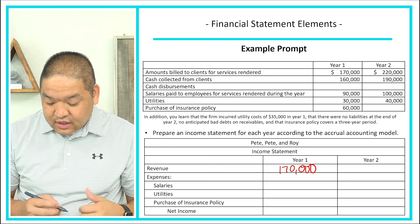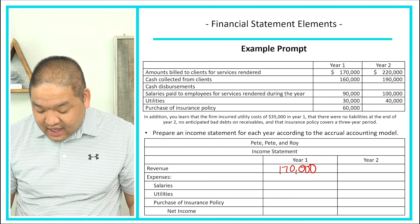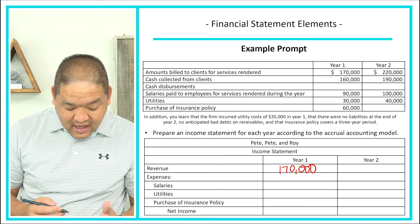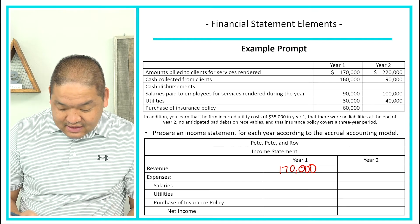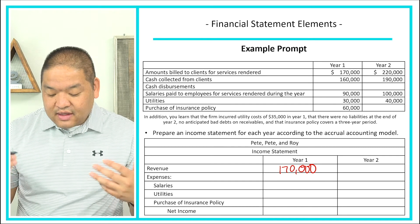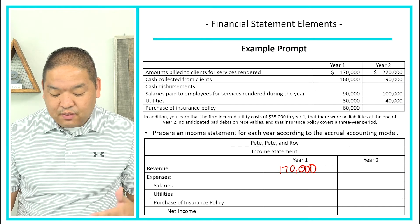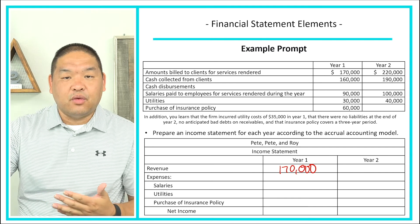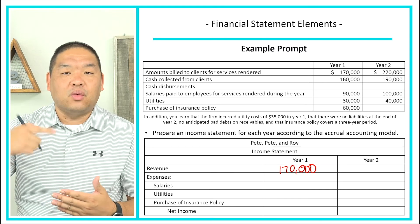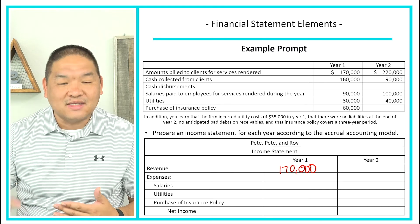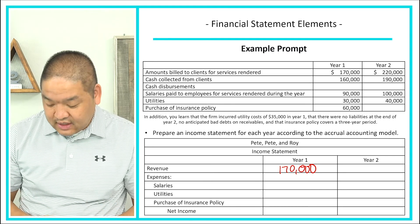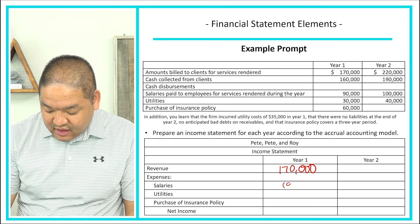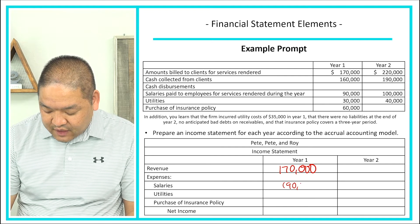Moving to expenses for year one: salaries — there are no special notes about salaries, so the assumption is that the salaries paid to employees equal what was expensed during the year. We subtract $90,000 for salary expense.